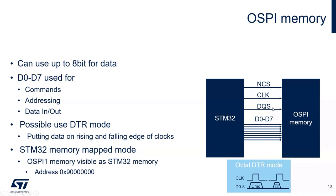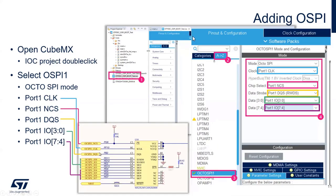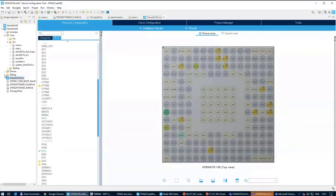Now it's more evolved because we have up to eight data lines, so we can read one byte per clock cycle. We still have the chip select and the clock, plus one optional additional signal for data strobing because we're running at higher frequency. In our case we will use the OctoSPI feature called DTR, which allows reading data on both the rising and falling edge. This strobing signal tells us when the data are already valid.